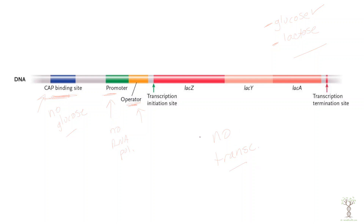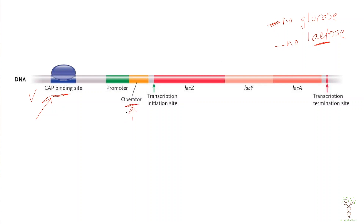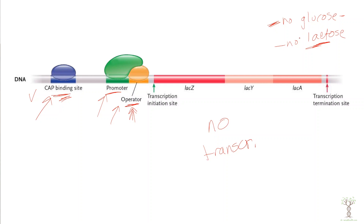In Scenario 2, there is no glucose and no lactose. With no glucose, the CAP activating protein will bind to the CAP binding site. However, with no lactose, the repressor will bind to the operator and prevent transcription. So in this example, the activator is present and polymerase can bind to the promoter, but because the repressor is also present, there will not be transcription.